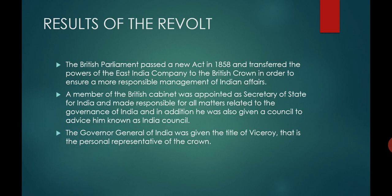What were the results of the revolt? The British Parliament passed an act in 1858, transferring power from the British East India Company to the British Crown, so that management could be more responsible regarding Indian affairs. A member of the British cabinet was appointed as Secretary of State for India, responsible for all matters related to governing India, and he was given a council of advisors known as the India Council.